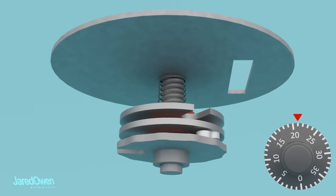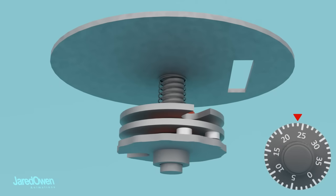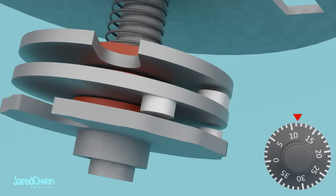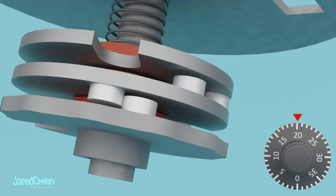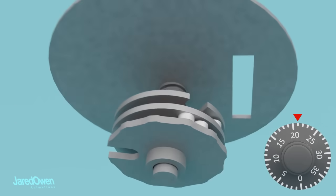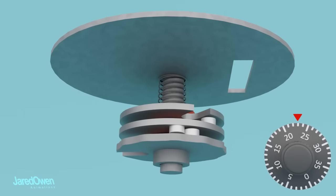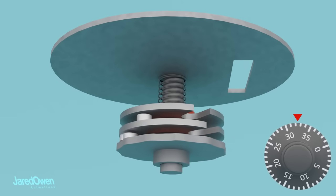Now let's work on the second number in the combination. This time we turn counterclockwise one full rotation. Watch as the teeth from cam one come in contact with cam two on the other side. Notice how this doesn't touch cam three, which is still right where it should be. Now we keep spinning the dial until we hit the second number, which is 34.